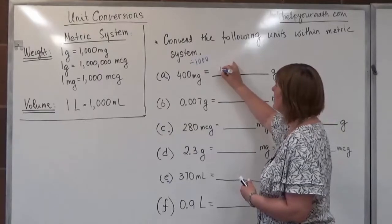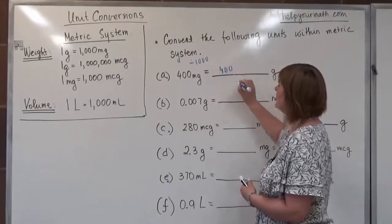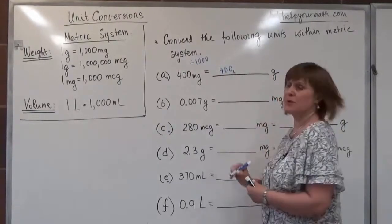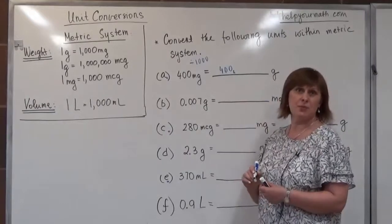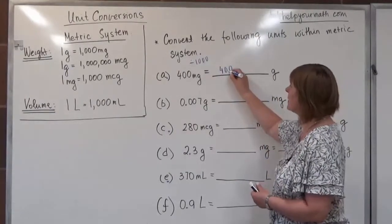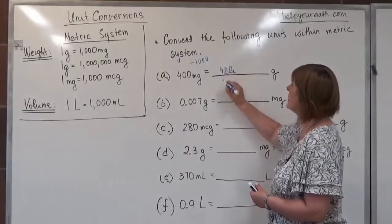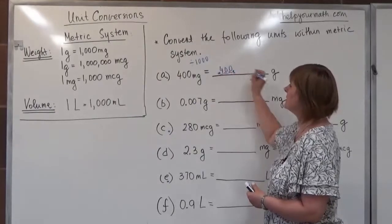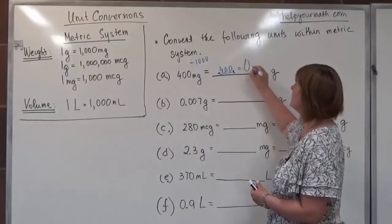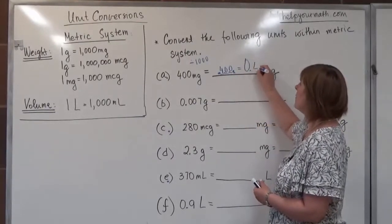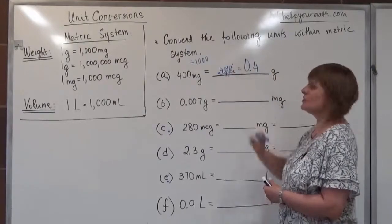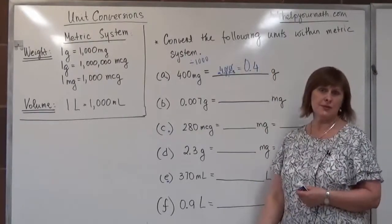We copy 400, drop the previous decimal point at the end of the number, and shift one, two, three places to the left. The final answer is 0.4, since we can drop the two trailing zeros.